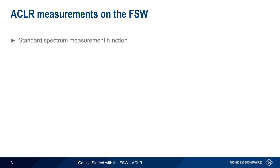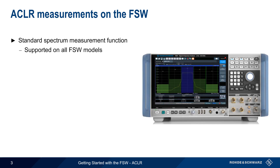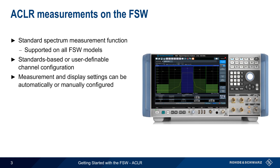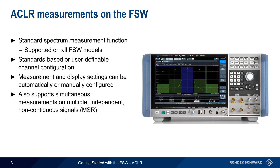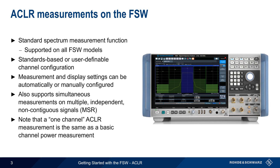ACLR is one of the standard spectrum measurements on the FSW, and is supported on all FSW Series Analyzers. Channels can be configured using predefined standards or can be manually defined by the user. Similarly, measurement and display parameters can be either automatically or manually configured. In addition to typical ACLR tests with a single transmit channel, the FSW also supports measurements on multiple, independent, non-contiguous signals or carriers — sometimes referred to as an MSR, or multi-standard radio measurement. It's also worth noting that a one-channel ACLR measurement, measuring only the transmit channel, is how basic channel power measurements can be performed on the FSW.